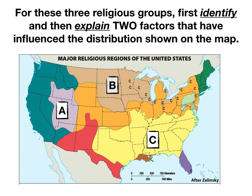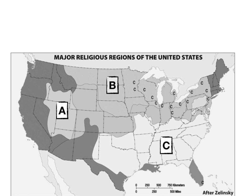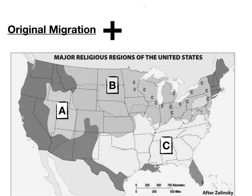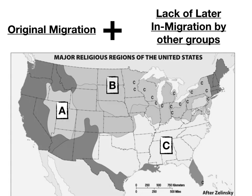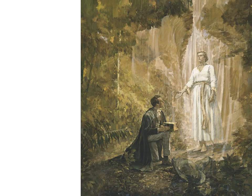We're going to look at three specific religions and identify and explain two factors that have influenced the distribution of these religions shown on the map. A are the Mormons, B are Lutherans, and C are Southern Baptists. For each of the three, it comes down to two major factors: the first factor is the original migration of people of that sect or religion into that area, and the second factor is a lack of in-migration by other subsequent groups. Let's take each one by one.